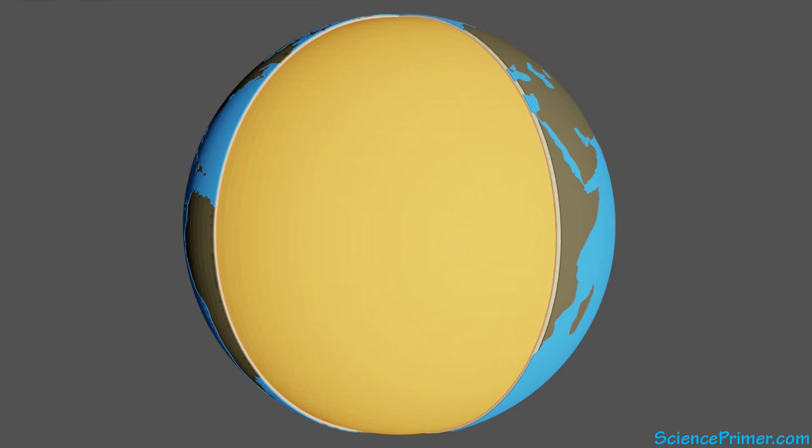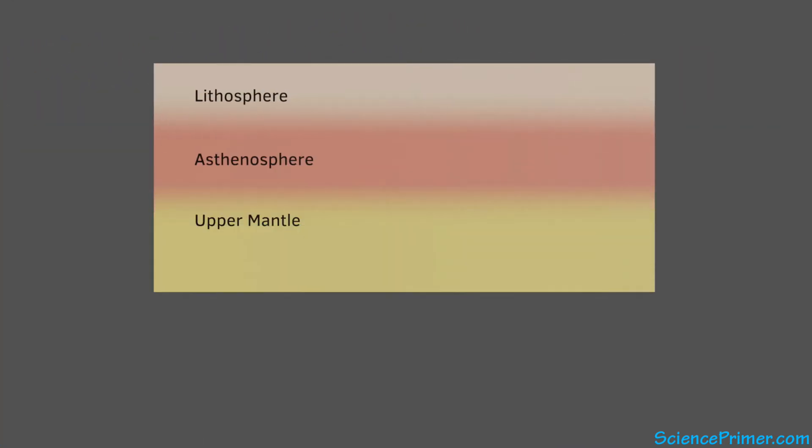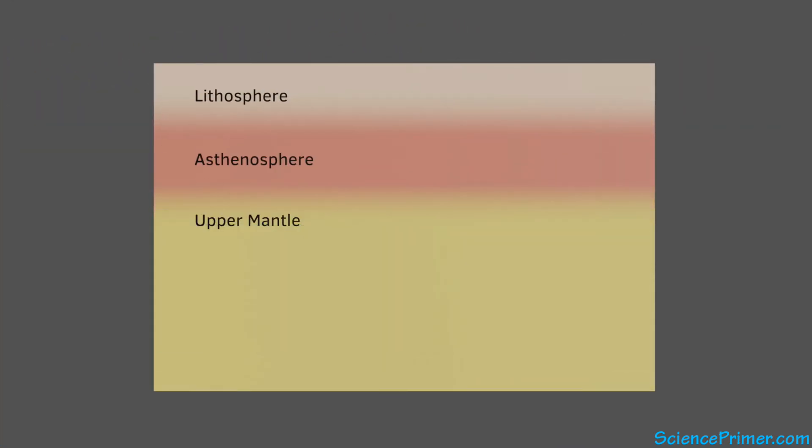To understand why the asthenosphere exists, it's helpful to think about how conditions change with depth in this region. Both temperature and pressure change across these transitions from lithosphere to asthenosphere and then into the upper mantle. Since the temperature at which a material will melt depends upon pressure, we can draw a line across this chart showing the boundary where mantle material will melt. To the left of this line, the material will be solid.